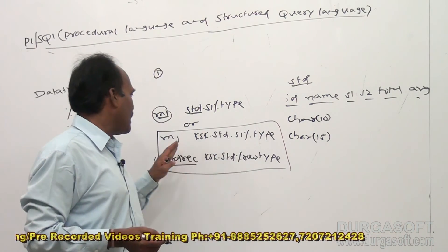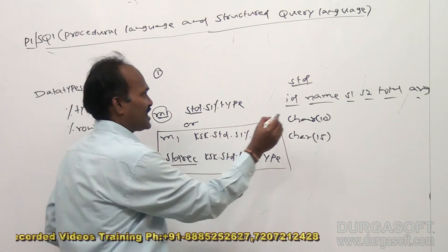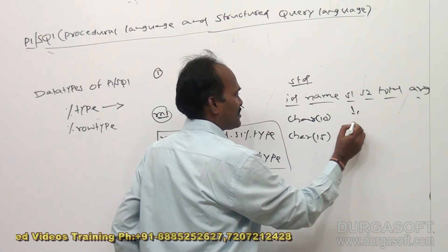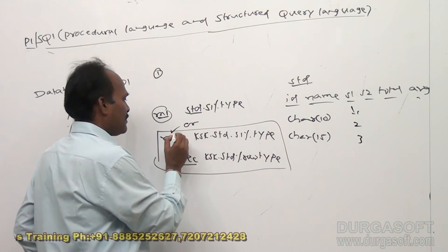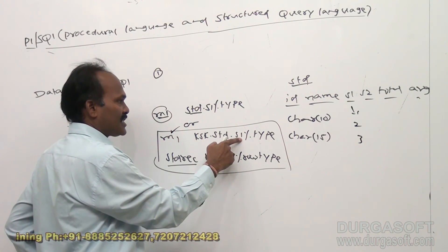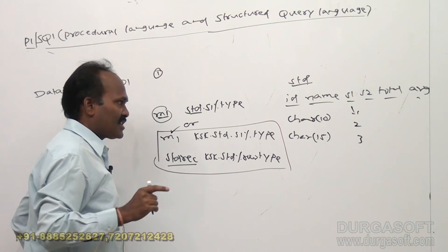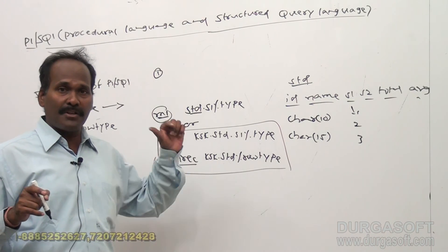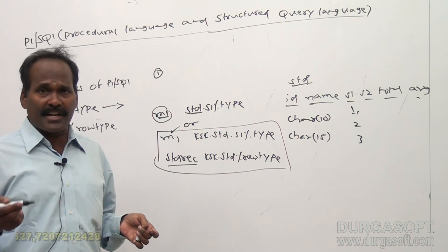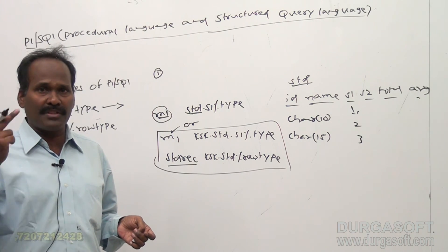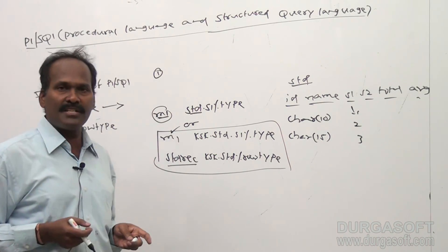The second advantage is: suppose character type previously was 10 characters, and in the future I may change width to 15 characters. Now according to the changes, the m1 or the variables also be changed. Suppose here s1 width previously was 2. Now I am changing it to 3. Now what happens? m1 becomes 3 automatically according to s1. The m1 will also be changed. First advantage is when you do not know exact types of column table columns. And second one is: in the future you may change data types and sizes. According to that requirement, the variables are changed. So these are the advantages of percentage type and percentage row type.